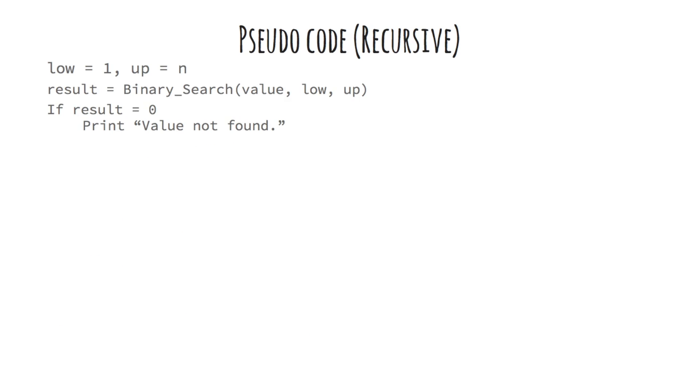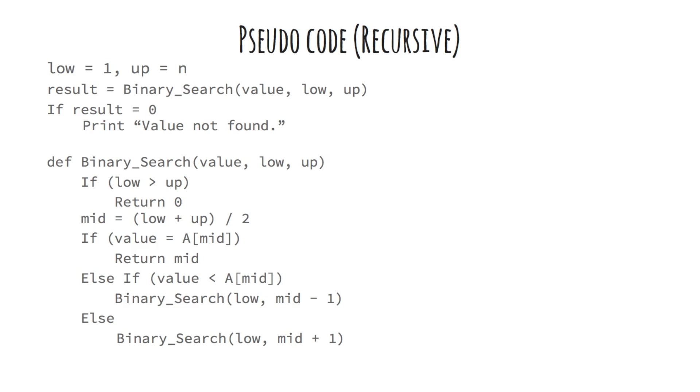Here I have written the pseudocode for the recursive version of binary search. Recursive functions are functions that call itself repeatedly on reduced problem size. Value is the item to be searched for and a is the data collection of size n. First we initialize lower limit low equal to 1, upper limit up equal to n, and start the binary search. Then we recurse over the data while the lower limit is not greater than the upper limit. We check if the middle element is equal to the value. If yes, we return the location. Otherwise we recurse over lower or upper half depending on the value.